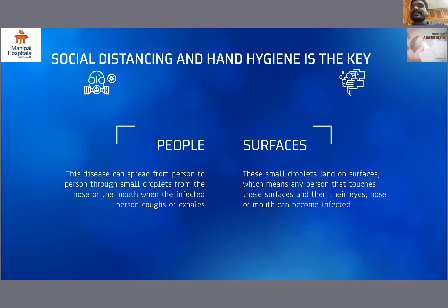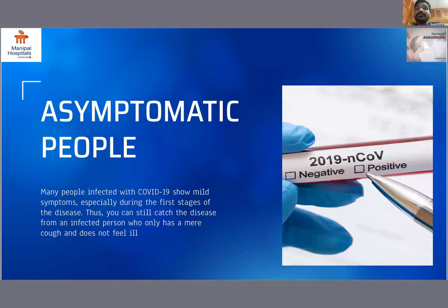Social distancing and hand hygiene is the key to keep COVID-19 at bay. The disease can spread from person to person through small droplets from the nose or mouth when the infected person coughs or exhales. These small particles land on surfaces, and any person who touches the surface and then their eyes, nose, or mouth can become infected. Even asymptomatic people — many infected with COVID-19 show mild symptoms especially during the first stages of the disease, or no symptoms at all — can still spread the disease. So social distancing is the key.